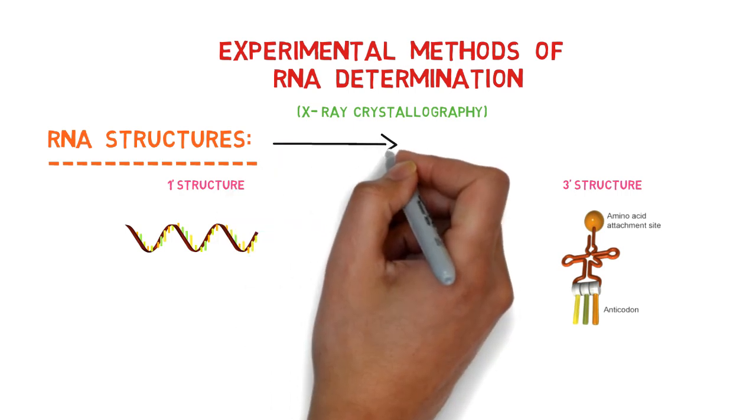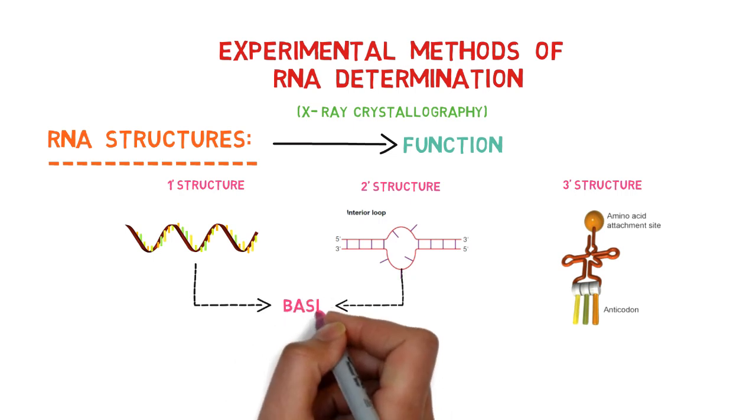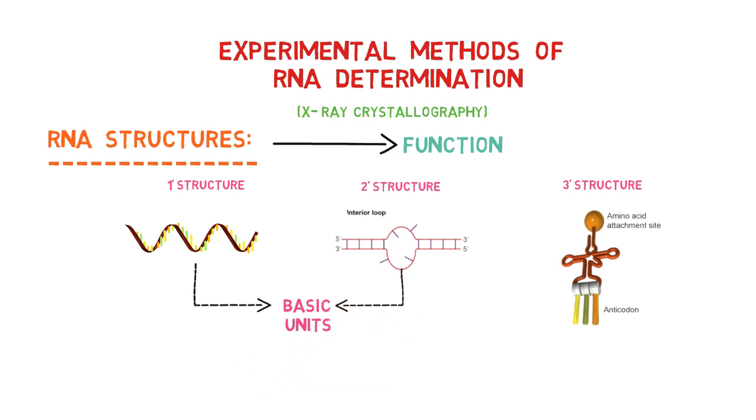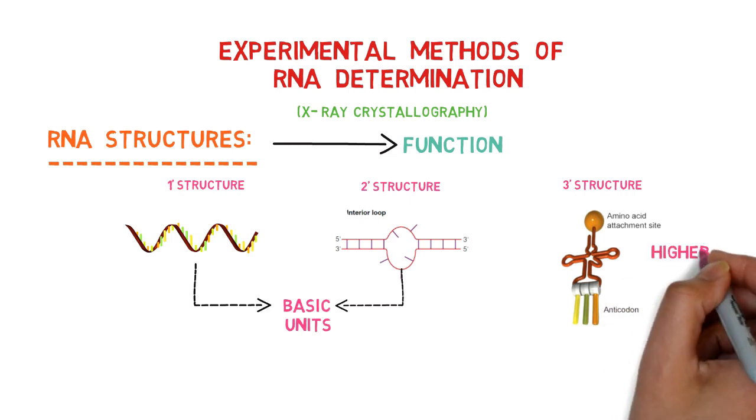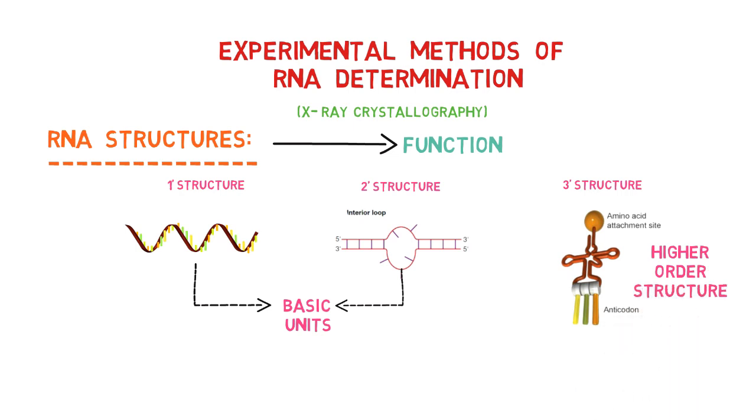RNA molecules serve a wide range of functions that are closely linked to their structures. The basic structural units of RNA consist of single and double-stranded regions. In order to carry out advanced functions such as catalysis and ligand binding, certain types of RNAs can adopt higher order structures.